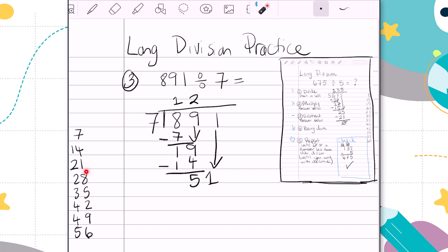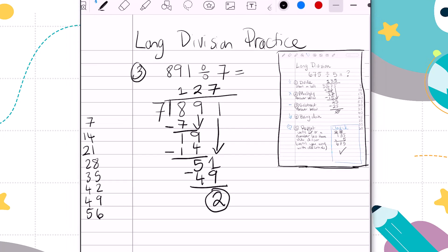I'm going to see 1, 2, 3, 4, 5, 6, 7, 8. Oh, too far. 7. 7 times 7 is 49. And 51 minus 49 is 2. That means our answer is 127 remainder 2. But don't forget, we need to check it out.